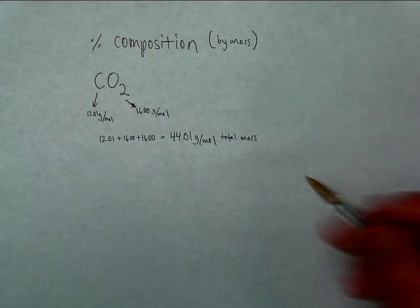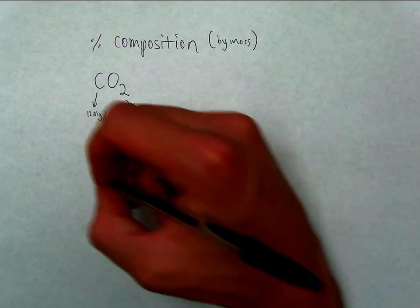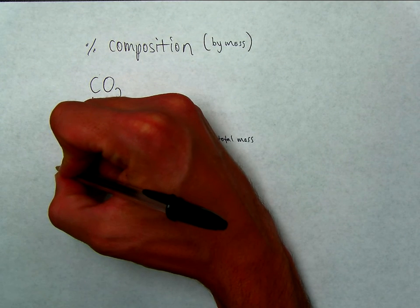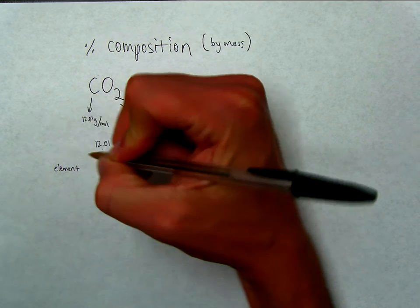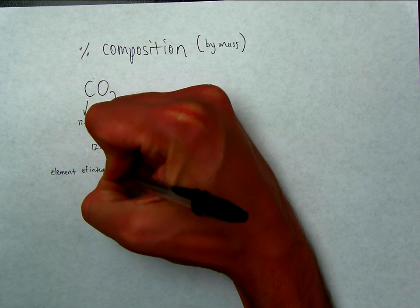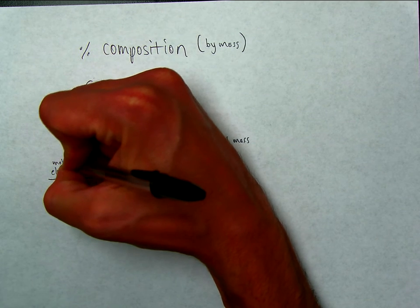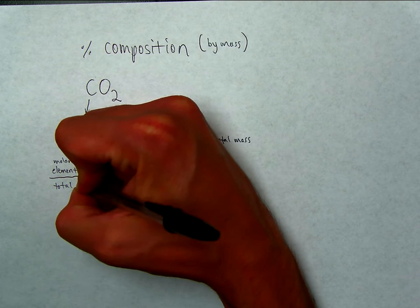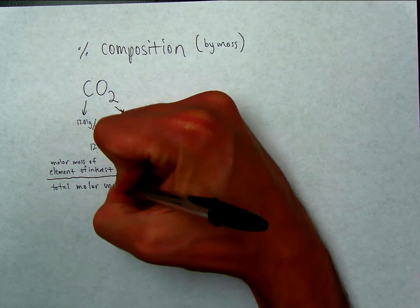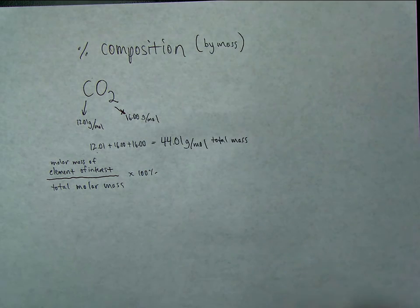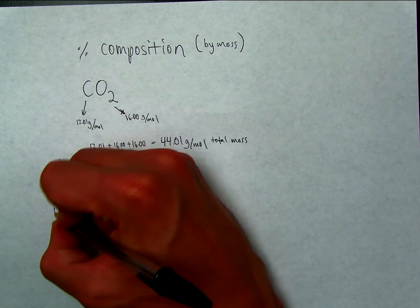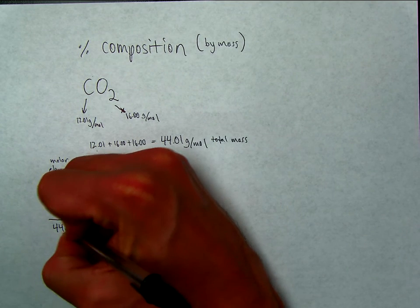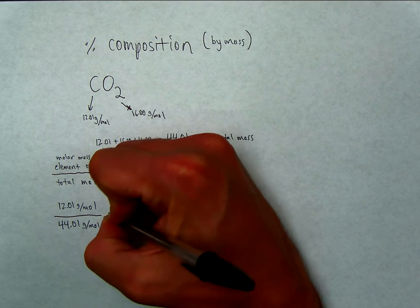That's the percent composition I'm looking for. Anytime I want to do percent composition, I take the molar mass of the element of interest, divided by the total molar mass, times 100%. Let's do this with carbon: 12.01 grams per mole divided by the grand total molar mass of 44.01 grams per mole, times 100%.